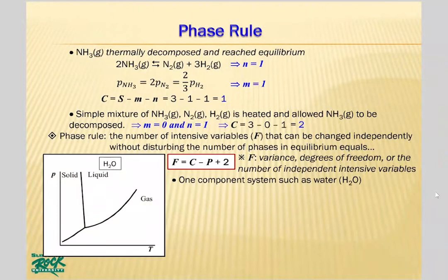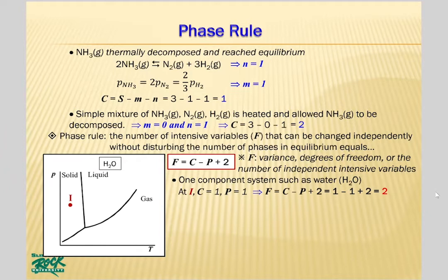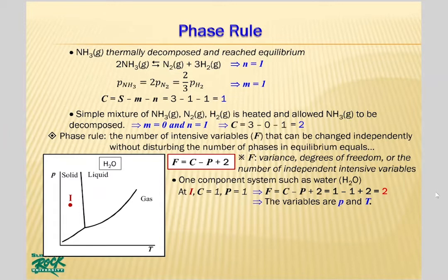Let's apply the phase rule to a one-component system like water. A phase diagram of water is shown. Region 1 represents the solid phase, so the number of phases P equals 1. Since it's a one-component system, C equals 1 as well. Consequently, F equals 2 at region 1, meaning there are two intensive variables — pressure and temperature — that can be changed independently without disturbing the number of phases.